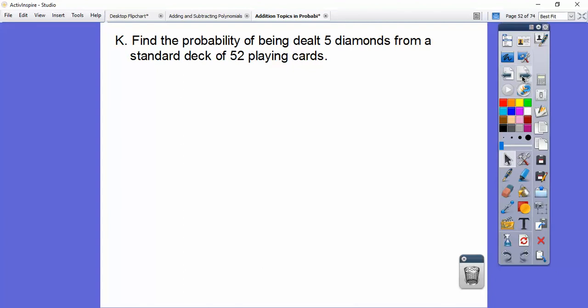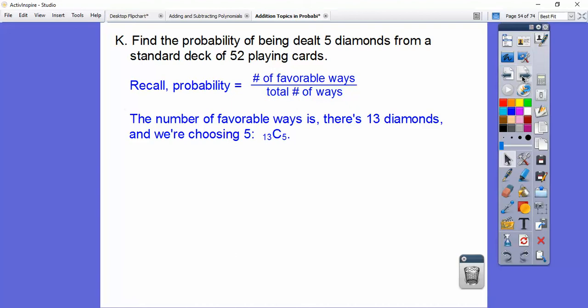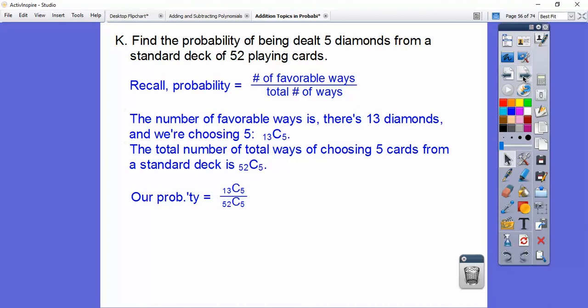Find the probability of being dealt 5 diamonds from a standard deck of 52 playing cards. Remember, probability is number of favorable outcomes over total number of outcomes. So the number of favorable ways is there's 13 diamonds in the deck and we're choosing 5 of them. We want them to be 5. So those are our favorable ways. 13C5. The order doesn't matter. So it's a combination. The total number of ways of choosing 5 cards from your deck is 52C5. So our probability becomes 13C5 over 52C5. So 13 factorial over 13 minus 5 factorial times 5 factorial. 52 factorial over 52 minus 5 factorial, 5 factorial.